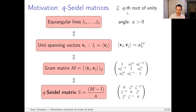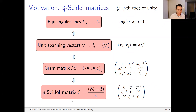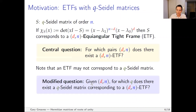This brings me to an object I'm calling a q-Seidel matrix. Here q is the order of a primitive root of unity, so my zeta is always going to be some primitive q-th root of unity. If you know about real equiangular line systems, you'll recognize that the q-Seidel matrix is a reasonable generalization, though from a different direction you might call it something else.